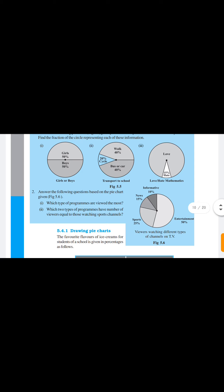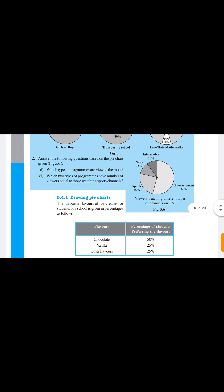In the third figure, love and hate mathematics: haters are 15 percent, so lovers will be 85 percent because the whole circle represents 100 percent. Haters: 15 upon 100 equals 3 upon 20 after cancelling. Lovers: 85 upon 100 gives 17 upon 20.